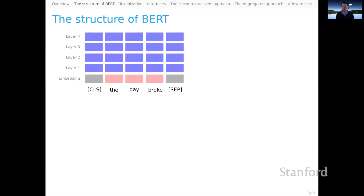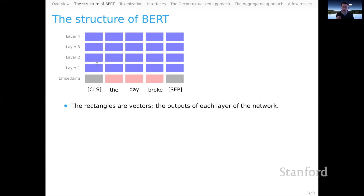So let's start with the structure of BERT. BERT processes sequences. Here I've got a sequence: the class token, 'the', 'day', 'broke', and SEP. Class and SEP are designated tokens — the class token typically starts the sequence, and SEP ends the sequence and can also be used internally to mark boundaries within the sequence you're processing. BERT processes those through an embedding layer and then a lot of additional layers — here I've depicted four, but it could be 12 or even 24 layers. The rectangles represent vectors — they are the outputs of each layer in the network. A lot of computation goes into computing those output vector representations at each layer, but we're going to set that aside and just think of this as a grid of vector representations.